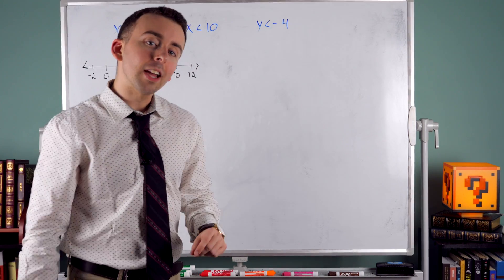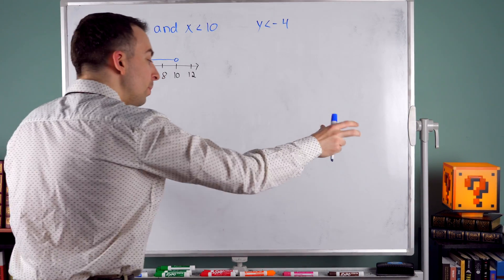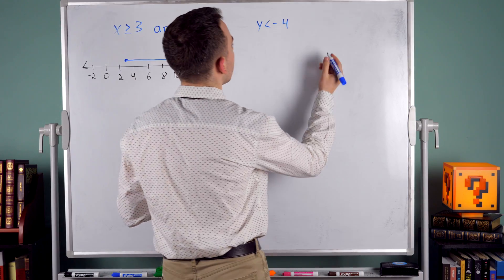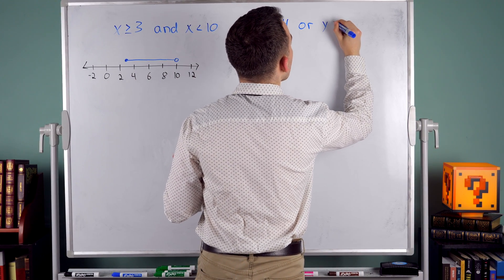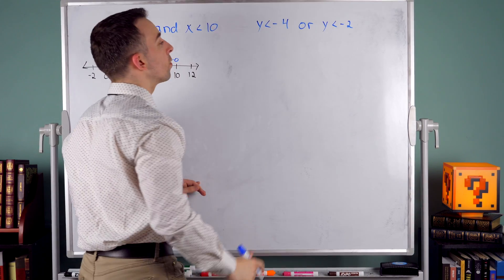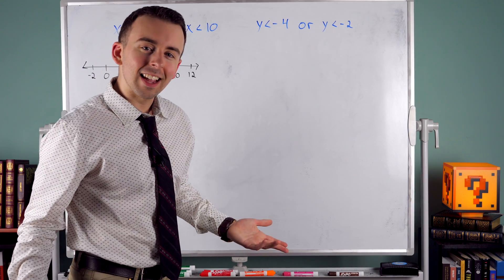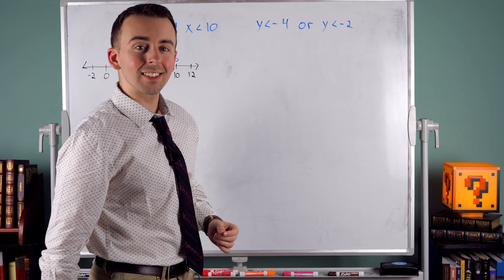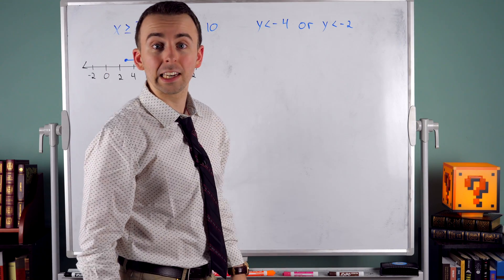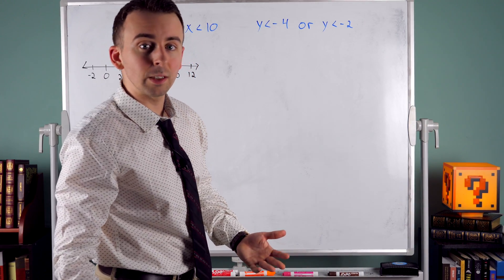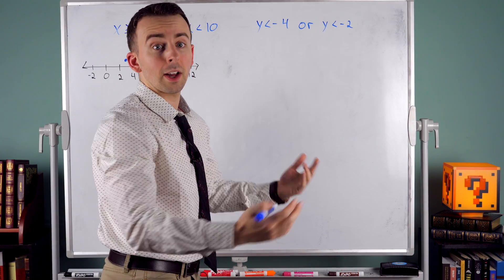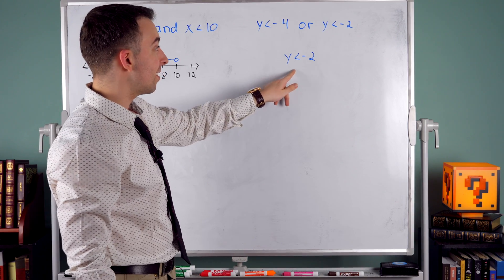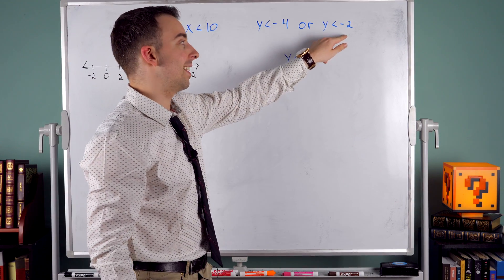Now the other type of compound inequality is pretty cool — it sort of splits our inequality into two parts. It's called an OR inequality. For this other type, we could say y is less than negative 4 or y is less than negative 2. Well, this is sort of a test — would that make sense to write? You could write it, but it wouldn't make that much sense because any number that's less than negative 4 is also less than negative 2. So y < -2 just contains all solutions to the other one plus some extras. This would be the same as just saying y is less than negative 2.